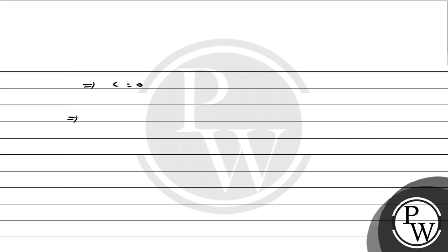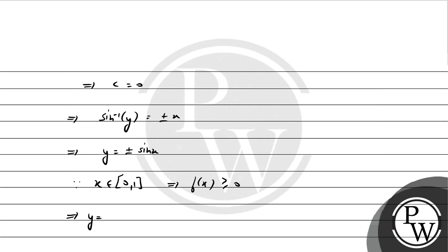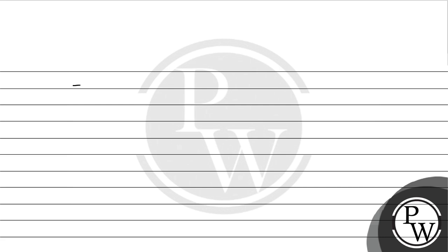तो c अगर 0 हो गया तो अपने पास जो function आएगा: sin⁻¹(y) = ±x, which implies y = ±sin(x)। अब जैसा कि हम देख सकते हैं, since x belongs to interval [0, 1], f(x) ≥ 0। So the negative case reject हो जाएगा, y = +sin(x) बनेगा। So this implies f(x) = sin(x)।